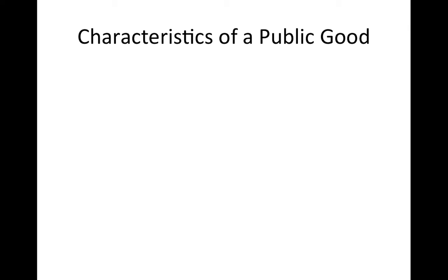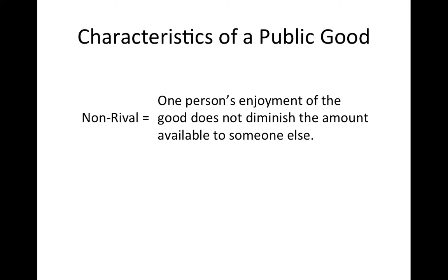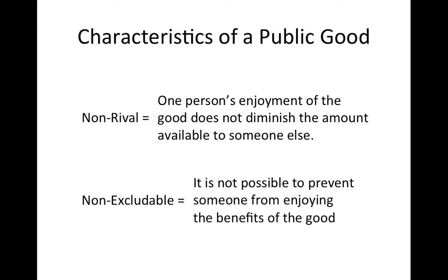Public goods have two characteristics. The first is that a public good is non-rival: one person's enjoyment of the good does not diminish the amount available to someone else. The second characteristic is that it is non-excludable — it is not possible to prevent people from enjoying the benefits of a non-excludable good. Let's consider potential examples to determine whether they satisfy these conditions.